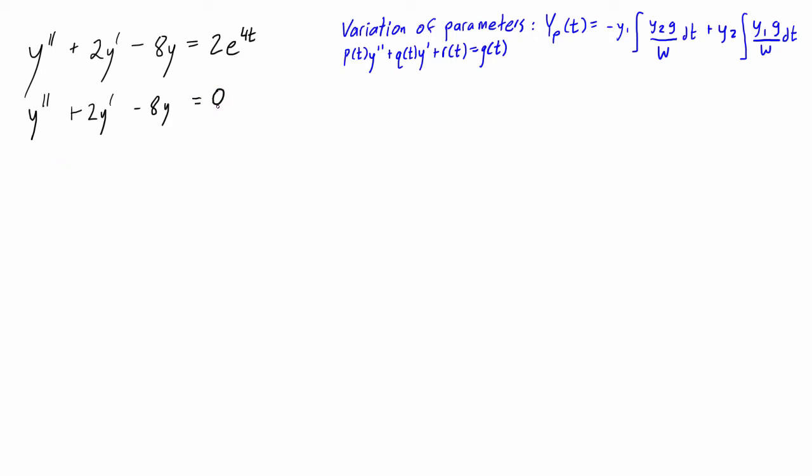And then what we can do is we can write the characteristic equation for this homogeneous version. And that's just going to be r squared plus 2r minus 8 equal to 0. So if we just clean this up a little bit, we can see that this is r plus 4 times r minus, let's make that r minus 2.